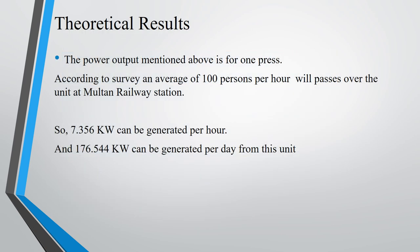The theoretical results show that the power output of the machine is in 4.1 press. According to the survey, an average of 100 people per hour will pass over the unit at motor rail station. So 7.356 kilowatt can be generated per hour and 176.544 kilowatt can be generated per day from this unit.